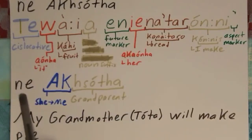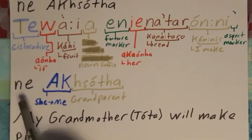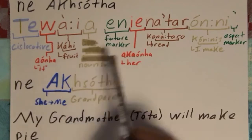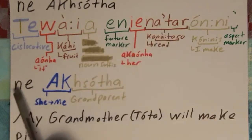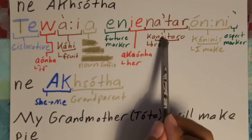Next is 'ne', and this can mean many different things depending on how it's used in context. In this case, it means 'the aforementioned.' So 'she will make bread, the aforementioned' — this is the person that is making it.